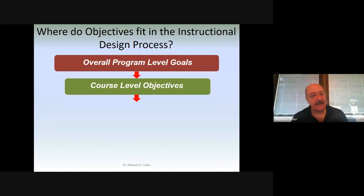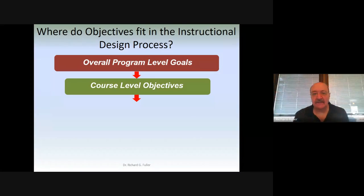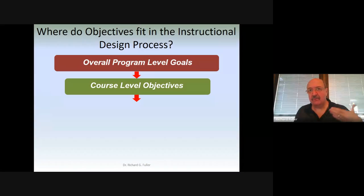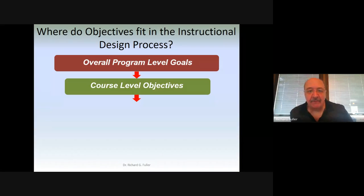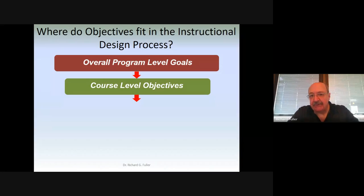Aligning your overall program-level goals with your course-level objectives sounds like a simple thing, and it actually is. You know your objectives, your program, and what your students need. Every one of you are experts in your own courses. Putting this down in curriculum format with a program-level goal and breaking it down into course-level objectives organizes it so that all faculty, all administrators, and everyone in the university understands what your program is doing and how.